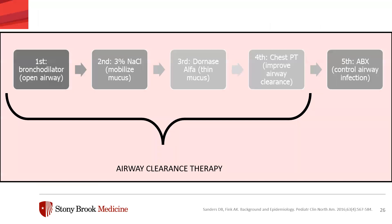Moving on to supportive care. All patients use a very specific sequenced regimen for chronic maintenance of cystic fibrosis — not just for exacerbations. The goal is effective airway clearance, preventing and treating lung infections, maintaining adequate nutrition, slowing disease progression, and optimizing quality of life. The sequence is: first, airway clearance therapy with a bronchodilator to open the airway; second, hypertonic saline to mobilize the mucus; third, dornase alpha to thin the mucus; fourth, chest PT to improve airway clearance; and lastly, antibiotics to control airway infection.